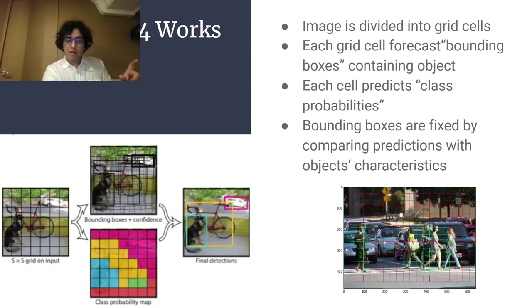As you can see, there are thousands of bounding boxes in the image above with the dog and bicycle. But then, the bounding boxes are fixed. The unnecessary bounding boxes are eliminated by comparing predicted values with actual values and the object's characteristics, such as width and height. An object this big cannot have a bounding box this big, for instance.